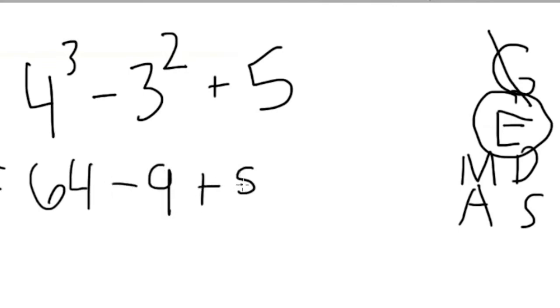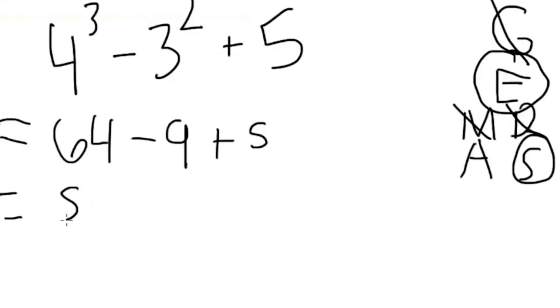64 subtract 9 plus 5. Then you do subtraction next. 64 subtract 9 equals 55. You do subtraction because it comes first from left to right. Next, you do the addition. 55 plus 5 equals 60. Your answer is 60.